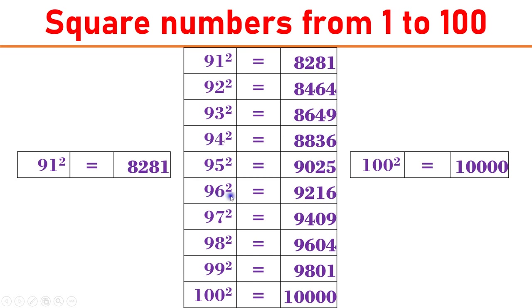96 square equals 9216. 97 square equals 9409. 98 square equals 9604. 99 square equals 9801. 100 square equals 10000.